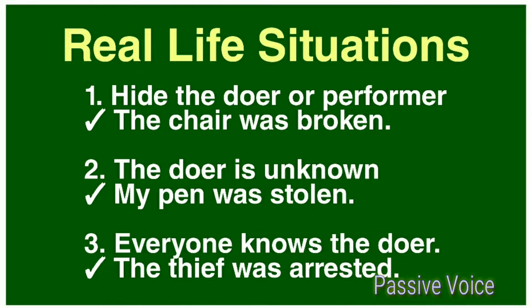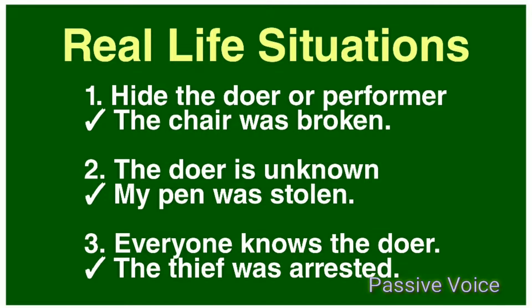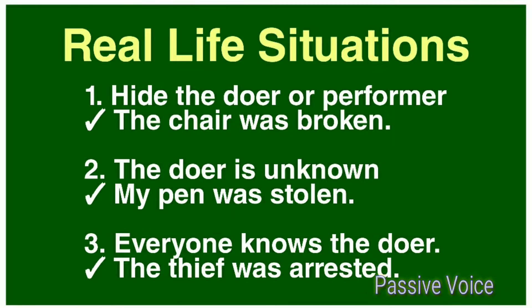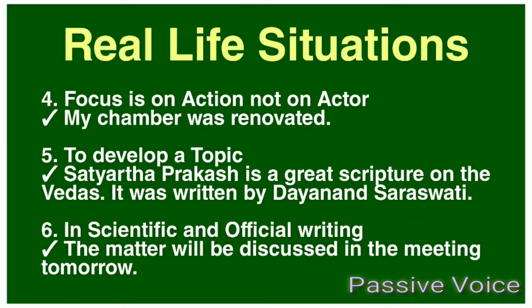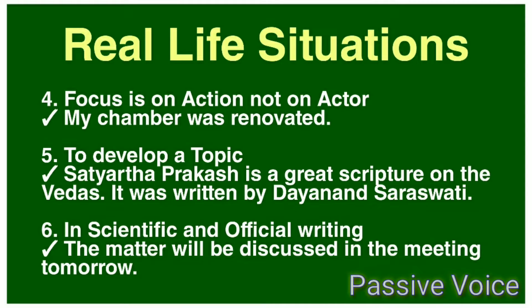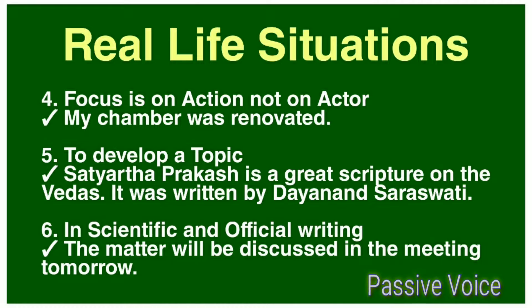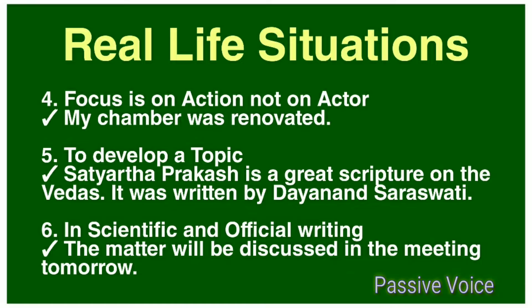In situation number three, when everyone knows the doer, we never use the agent. 'The thief was arrested' — everyone knows that the thief was arrested by the police. In situation number four, when we focus on the action and not the doer: 'My chamber was renovated' — we don't mention the names of the engineer, the laborers, or the persons who worked there. We simply focus on the action, not the actor.